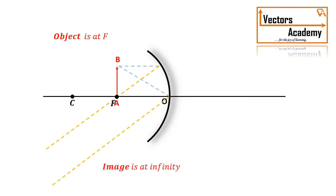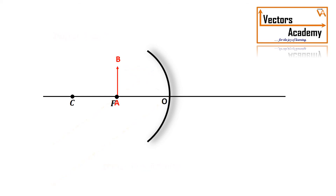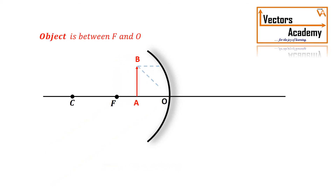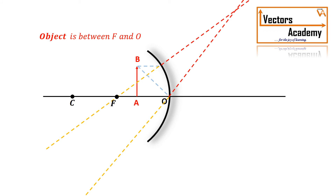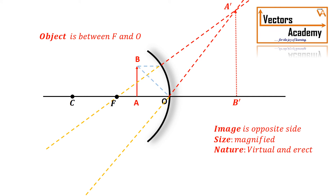When the object is brought even closer than the focal length, the rays get diverged. Extending them to the opposite side, you can see they intersect on the opposite side of the object. So the image formed is erect, enlarged, and virtual.